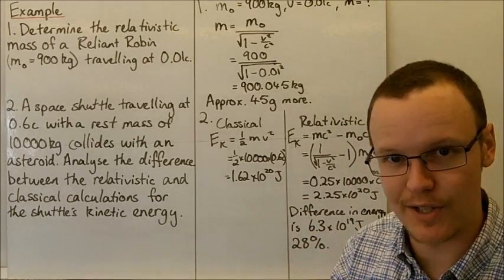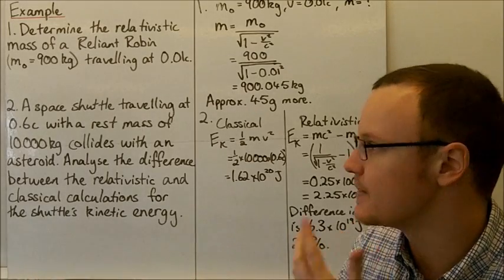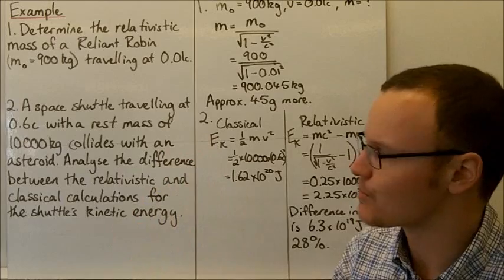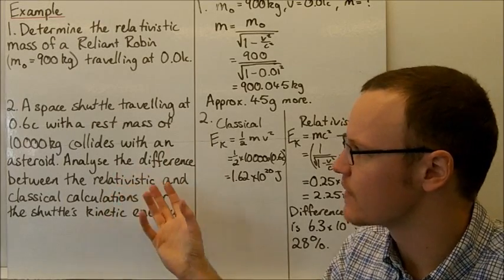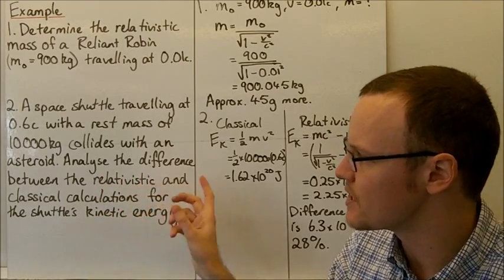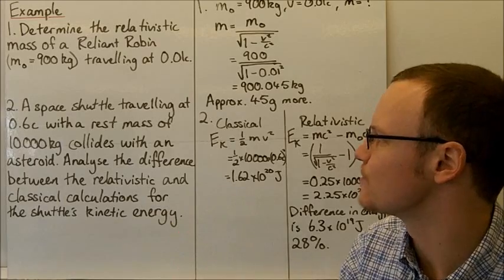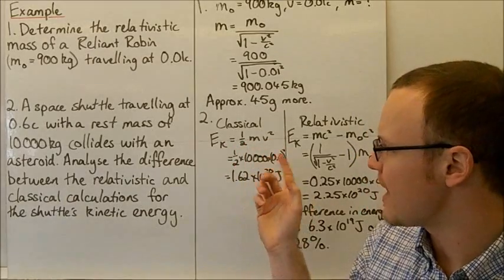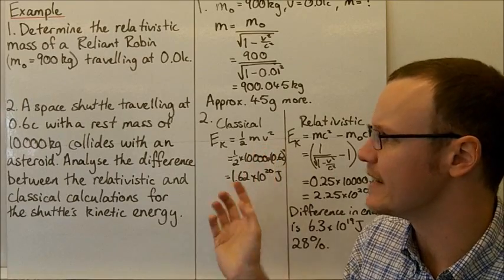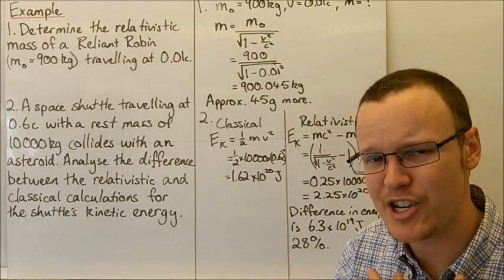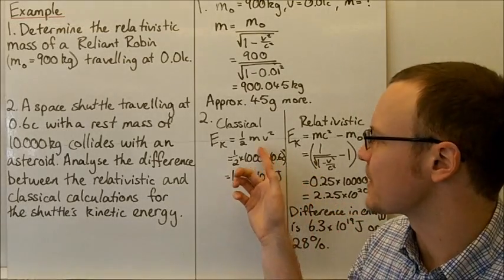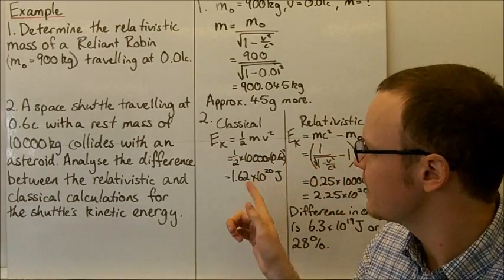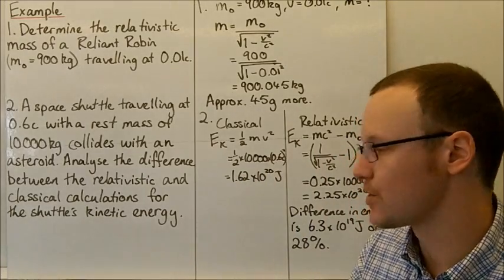Let's look at an example with a larger velocity to see what effect this has. A space shuttle travelling at 0.6c with a rest mass of 10,000 kilograms collides with an asteroid. Let's analyse the difference between the relativistic and classical calculations for kinetic energy. The classical calculation uses EK equals one half times mass times velocity squared, with no relativity — so this uses the rest mass of 10,000 kilograms. One half times 10,000 multiplied by 0.6c all squared gives 1.62 × 10²⁰ joules — a lot of energy.